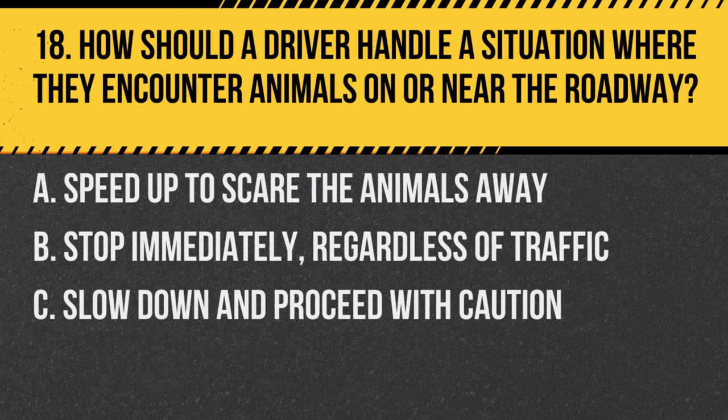Question 18. How should a driver handle a situation where they encounter animals on or near the roadway? A. Speed up to scare the animals away. B. Stop immediately, regardless of traffic. C. Slow down and proceed with caution. Answer: C. Slow down and proceed with caution. Reducing speed and being cautious helps prevent potential accidents involving animals.